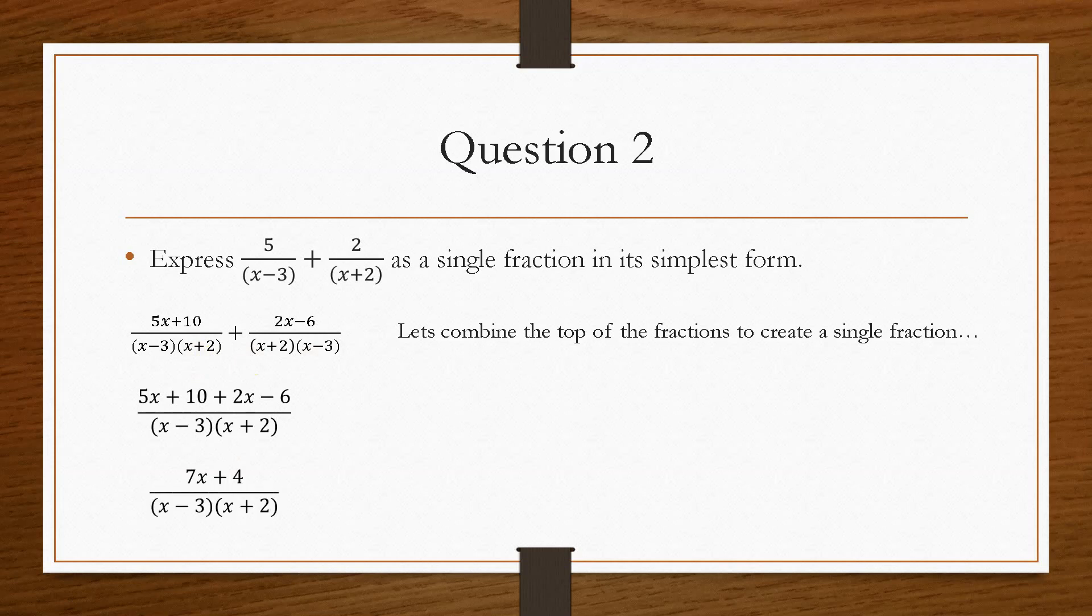And then if we tidy this up, we get 7x plus 4 over x minus 3, x plus 2. Now always check if the top of the fraction can be simplified, i.e. we could potentially have another common factor here, so we'd have to take that out as a common factor, and then see if anything will cancel on the top and the bottom.